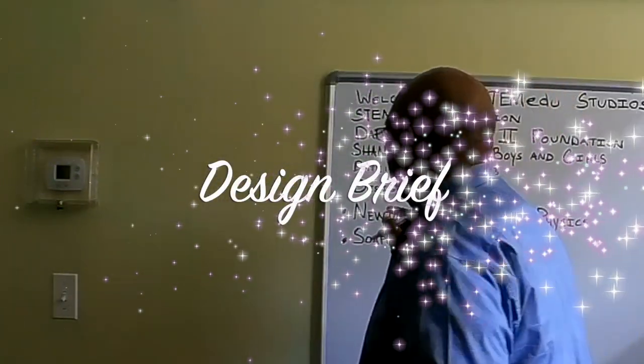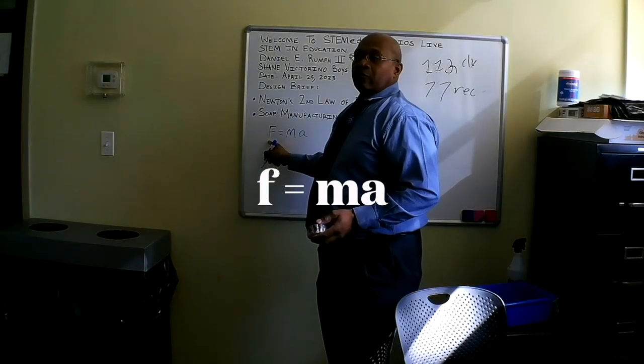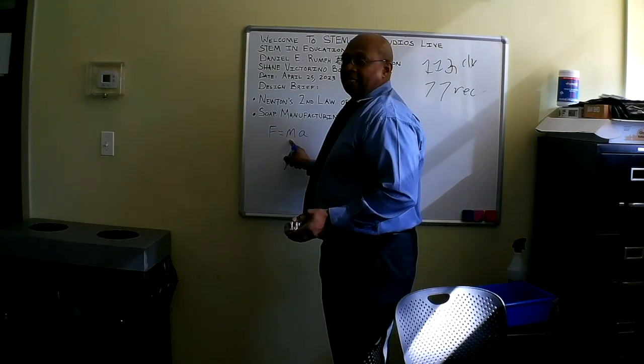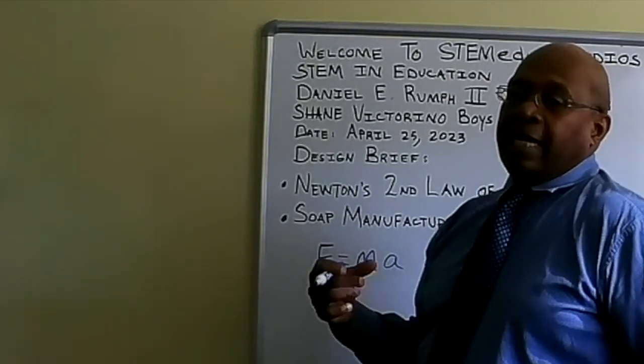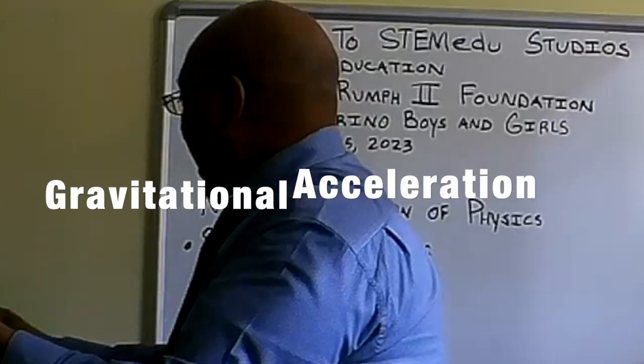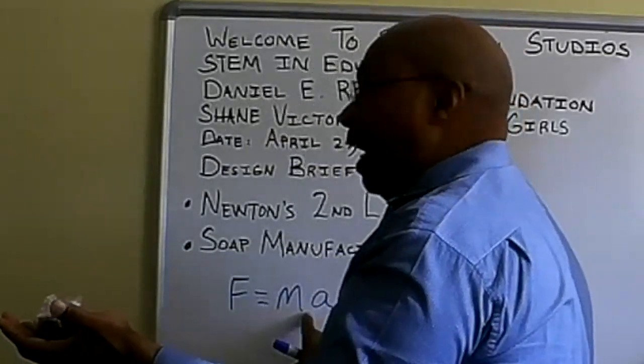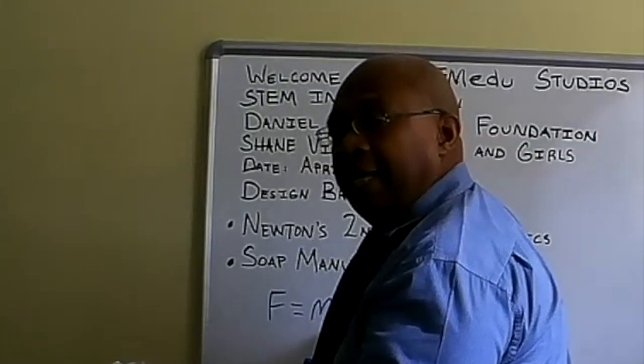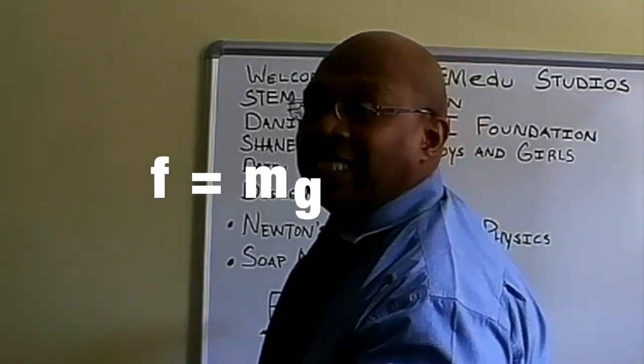Newton's second law states force equals mass times A. F represents force, M represents mass, A represents acceleration. The acceleration that we're measuring is gravitational and this is the formula that we use. Force equals mass times. Now I'm going to change this A. Sometimes you can use G. And this G stands for gravity.